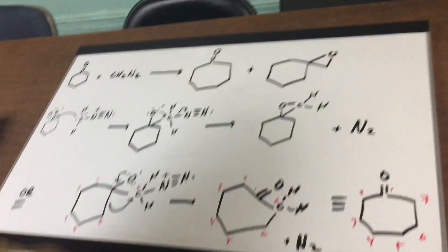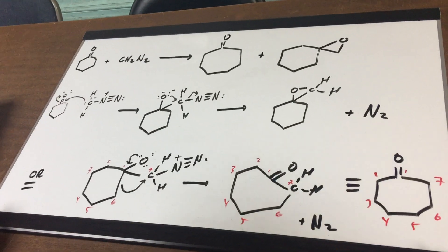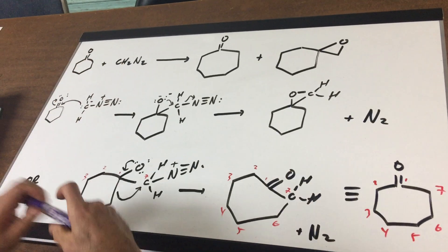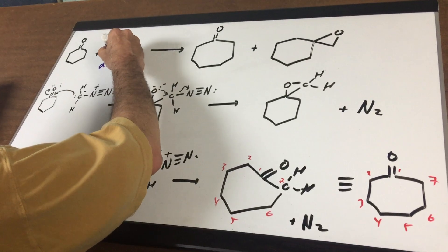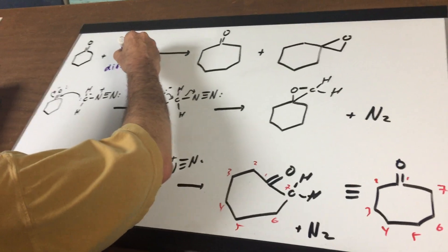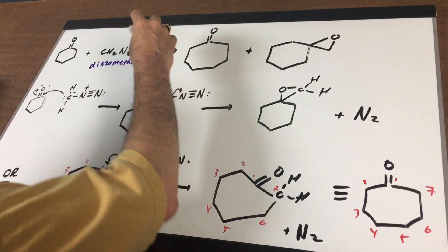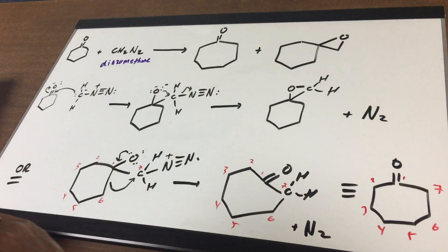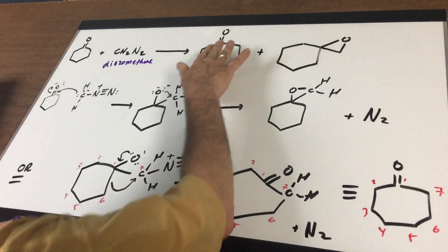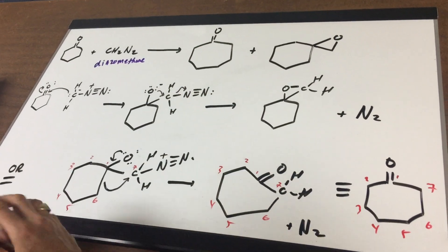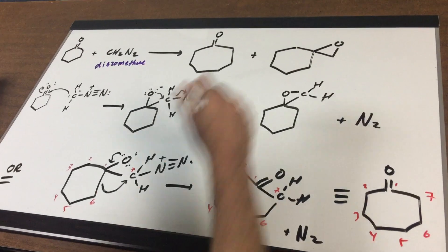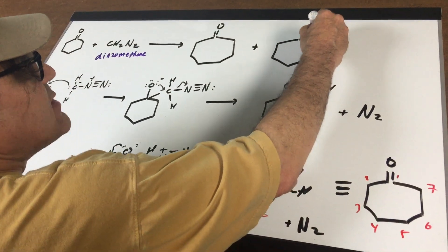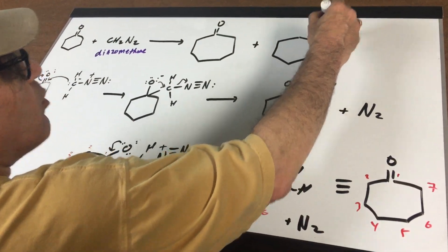What I'm going to do is treat cyclohexanone with this compound known as diazomethane, and I'm going to get two products. I'm going to get a ketone once again, but I've expanded the ring, and then I'm going to get this spiro epoxide. Notice it's called spiro because it's connected at one carbon only.